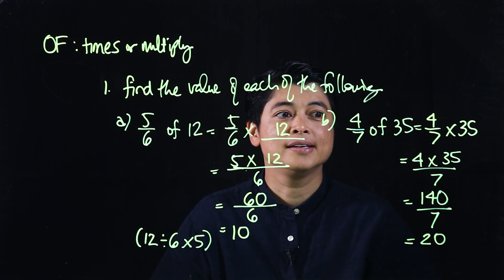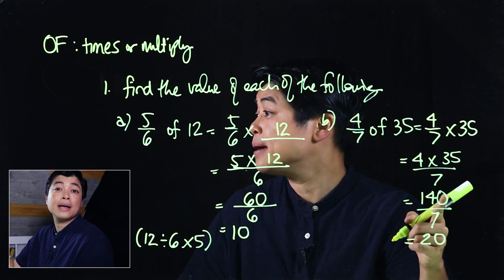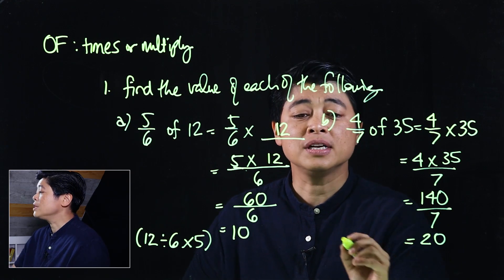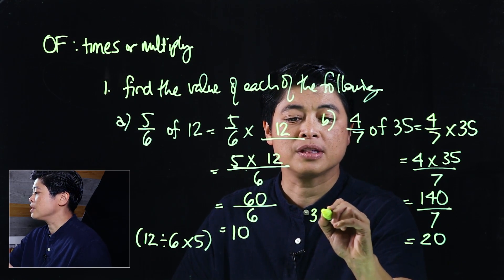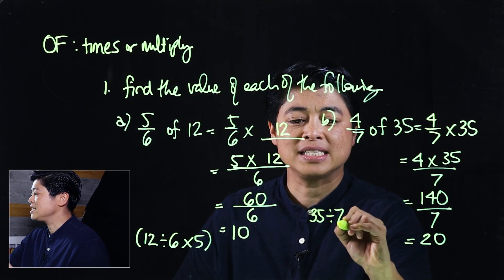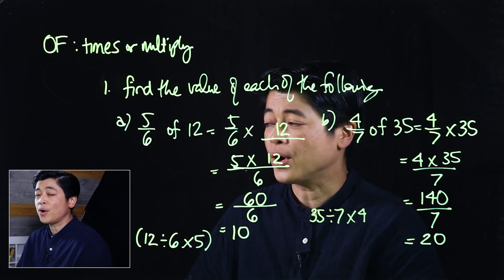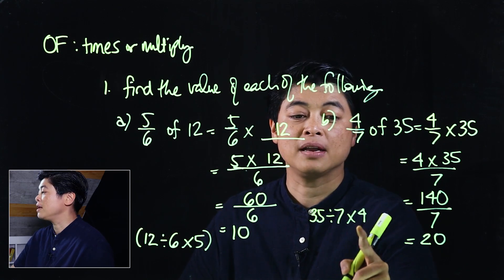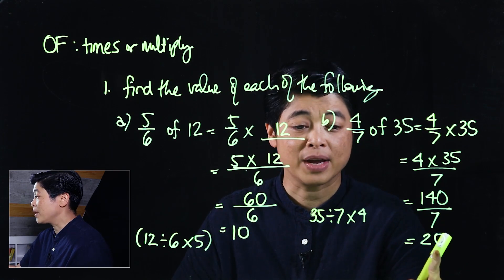But again that is huge, it's a big number and it's hard to do mentally. So the alternative is just to do 35 divided by 7 times 4. If we take 35 divided by 7, that would be 5 multiplied by 4, that will give us 20.